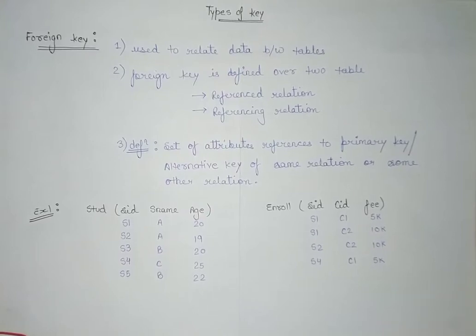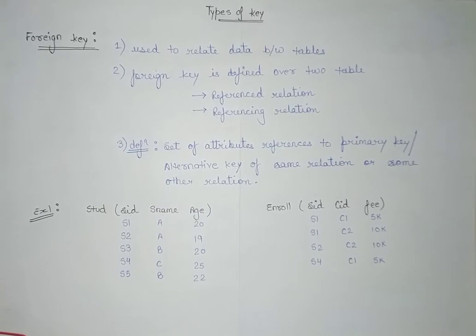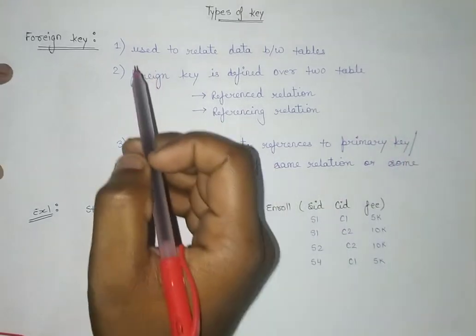Hello friends, welcome to CrackJet CSC. In this series on databases, today we are going to understand foreign key. It is the third type of key — we have already understood candidate key, primary key, super key, and alternative key. The only thing left in keys is foreign key, so let's understand the definition of foreign key, how it works, and the rest of the specifics as well.